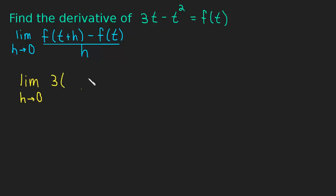Anyways, let's just continue. We have 3 times t plus h, so I plug that t plus h in for the first t minus t plus h squared. So that's the whole first chunk, that's f of t plus h. And then we have to subtract just f of t, which is 3t minus t squared, all over h. And now we just have some simplifying to do.